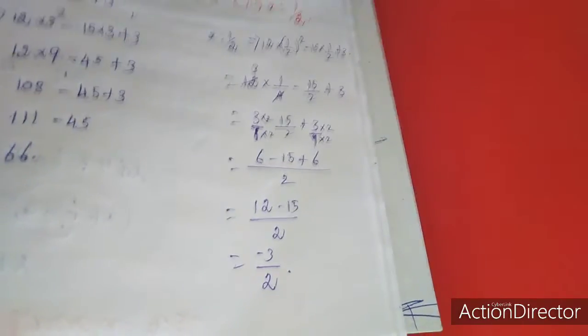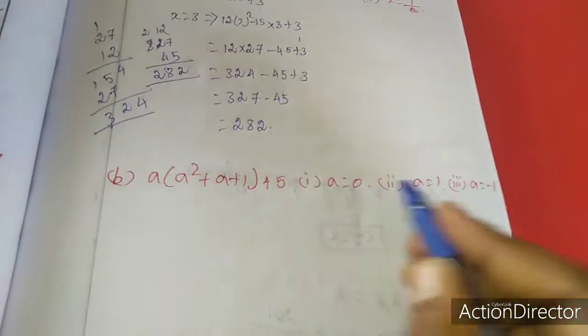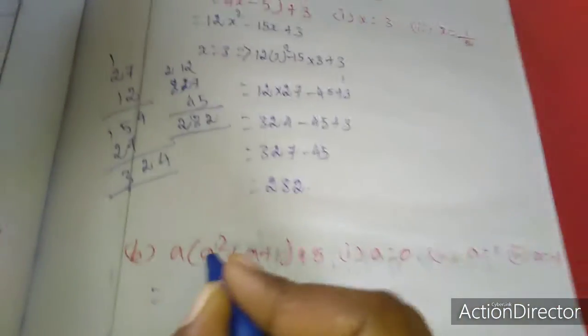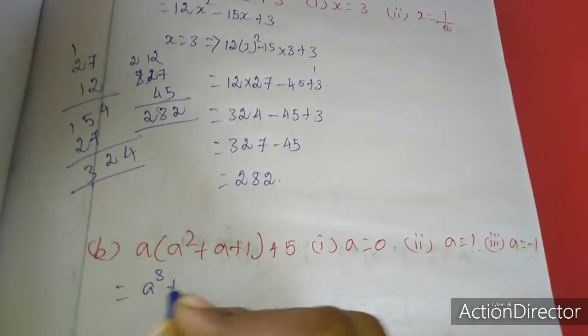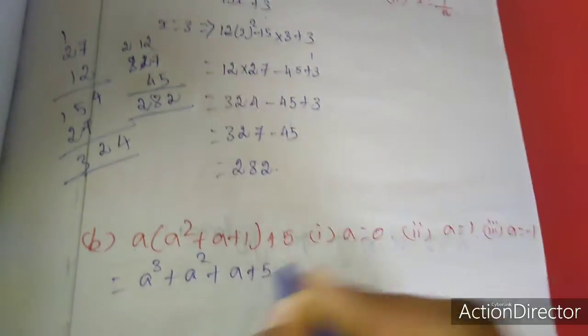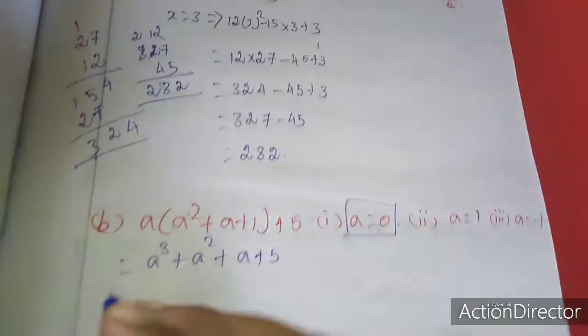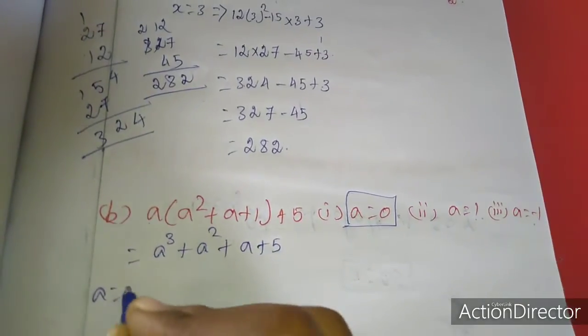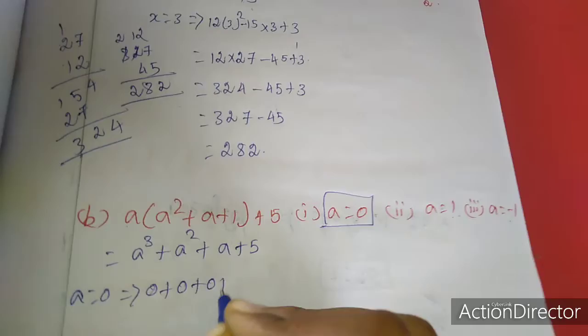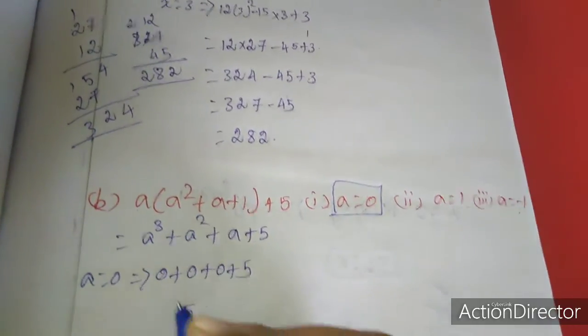Now I will move to the second subdivision, b sum. a equal to 0, a equal to minus 1. First we simply substitute. The expression is a³ + a² + a + 5. Now I will substitute a equal to 0, which implies 0 plus 0 plus 0 plus 5. So the answer is 5.